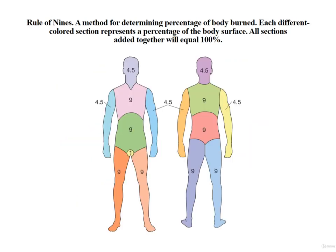On this slide is demonstrated the rule of nines — a method for determining the percentage of the body burned. Each different color-coded section represents a percentage of the body surface; when all the sections are added together, you get 100%. For example, if the entire left arm is burned, then the burn covers 9%. If the entire back and the back of the head are burned, then 27% of the body is burned.